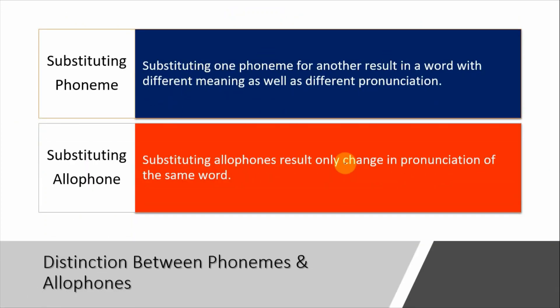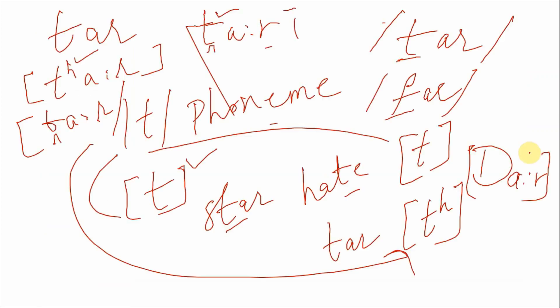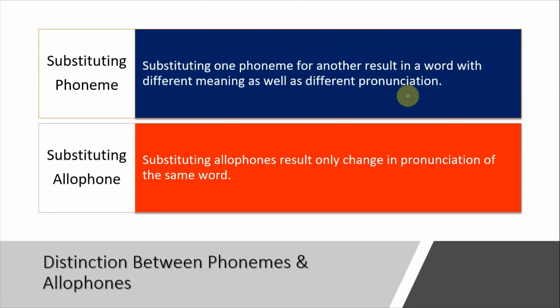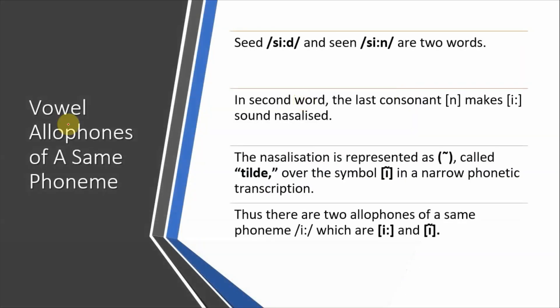Substituting an allophone results only in a change in pronunciation of the same word, not a change in meaning. If you use the flap version here for /t/, the meaning doesn't change — only the pronunciation changes. Similarly, if you use a more aspirated version or no aspiration, the meaning still doesn't change. But when we place a different phoneme, the meaning changes. So phonemes have different versions, and those versions appear in phonetics. This can be a bit complicated sometimes.